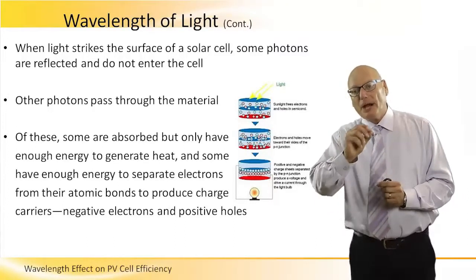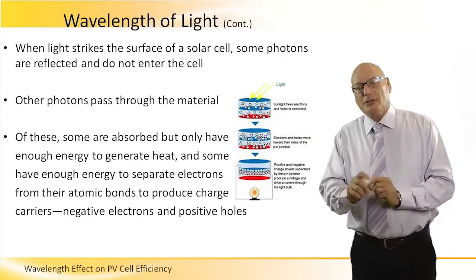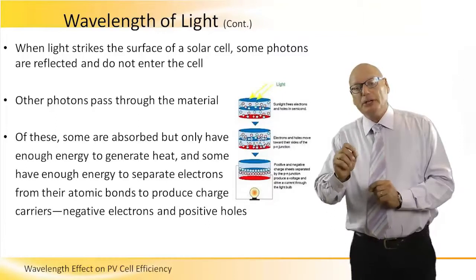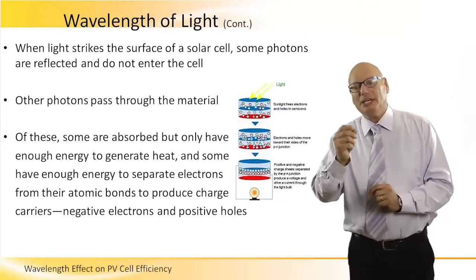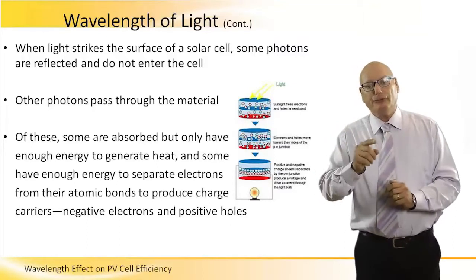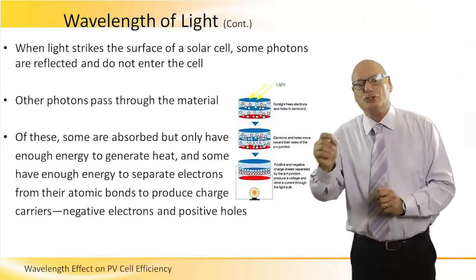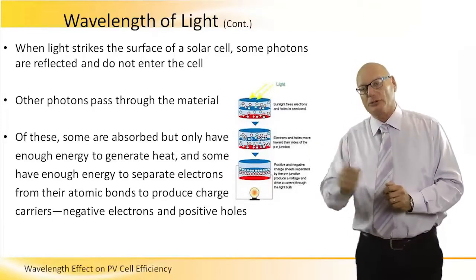Other photons pass through the material. Of these photons, some are absorbed but only have enough energy to generate heat, and some have enough energy to separate electrons from their atomic bonds to produce charge carriers - negative electrons and positive holes.